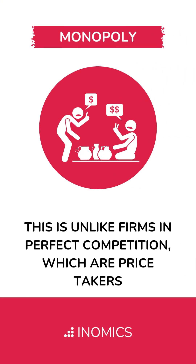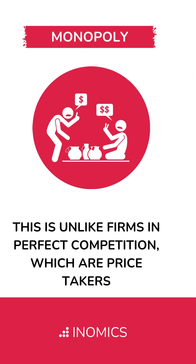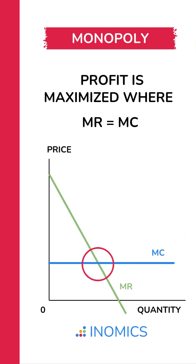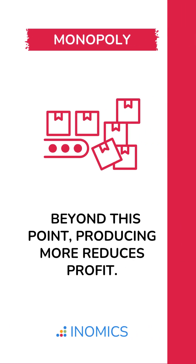Because consumers have no alternatives, the monopolist can charge a price above marginal costs, creating market power. Profit is maximized where marginal revenue equals marginal cost — MR equals MC. Beyond this point, producing more reduces profit.